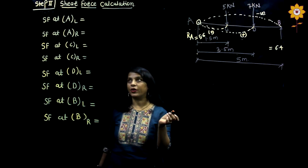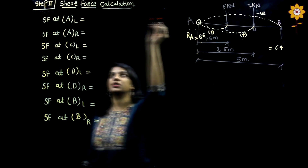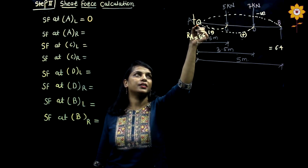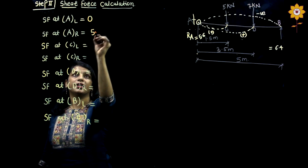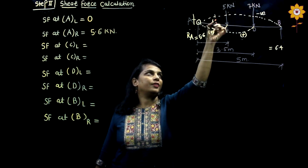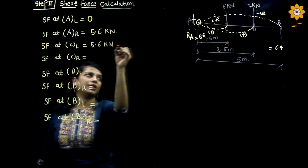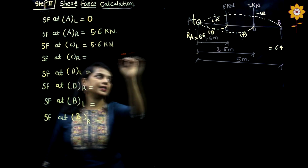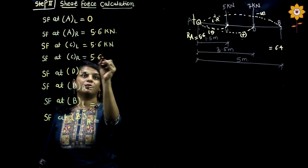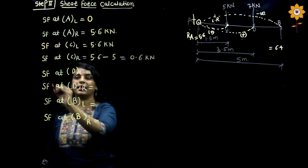Next step: calculate the shear force at each point. Shear force at A-left: there is no force, so it equals 0. Shear force at A-right: the force which acts at its own point is 5.6 kN. Shear force at C-left: same as previous value since there is no force between A and C, so 5.6 kN. Shear force at C-right: the force which acts at point C is subtracted, so 5.6 minus 5 = 0.6 kN.